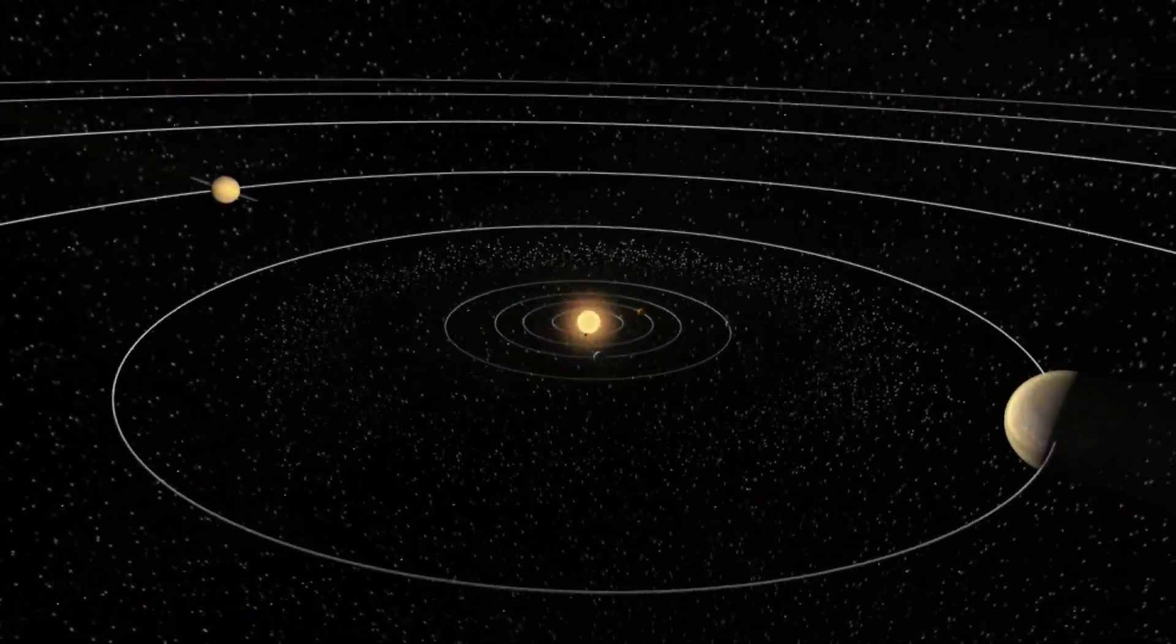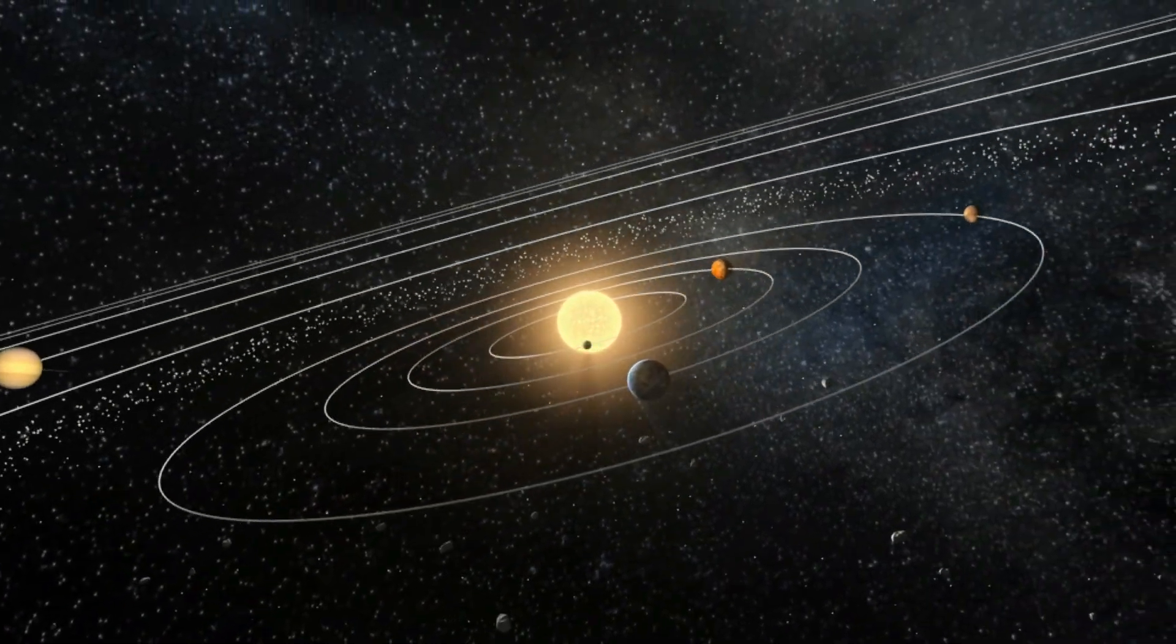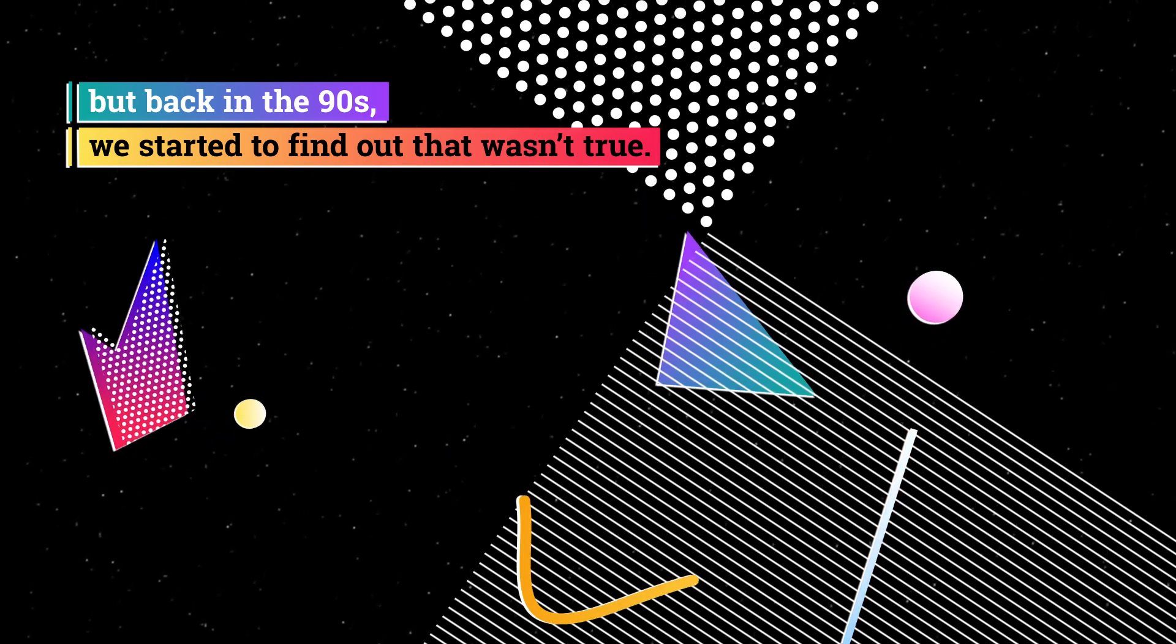All of these things make up our solar system. And for a long time, we thought that's how all solar systems would look. But back in the 90s, we started to find out that wasn't true.